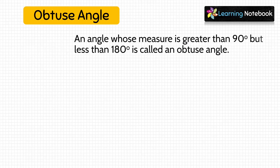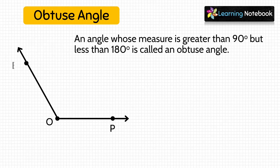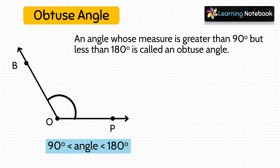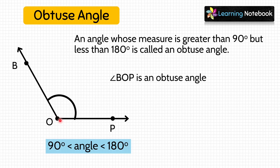Next type of angle is obtuse angle. An angle whose measure is greater than 90 degrees but less than 180 degrees is called an obtuse angle. Look at this angle here — angle BOP is greater than 90 degrees but less than 180 degrees, so angle BOP is an obtuse angle.